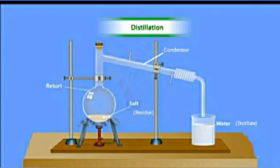Thus, pure water is collected in the beaker known as distilled water and impurities are left in round bottom flask. This method of separating soluble solids from liquids is called distillation.